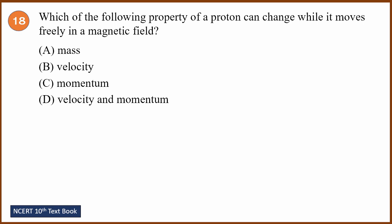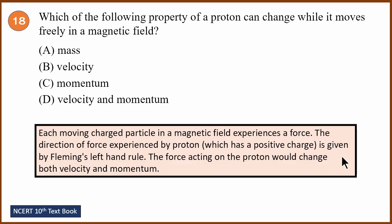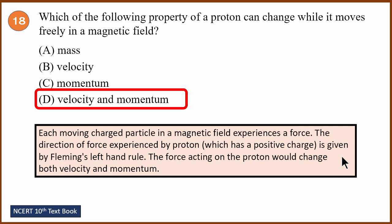Eighteenth question: which property of a proton can change while it moves freely in a magnetic field? Each moving charged particle in a magnetic field experiences a force — determined by Fleming's left hand rule. The force acting on the proton changes its velocity and its momentum. Mass does not change — that would require enormous energy. The correct answer is D: velocity and momentum.